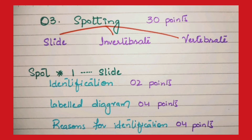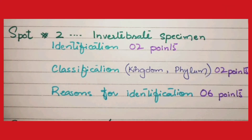Question number three is spotting. There are three spots given to you. Spot one is always a slide. In the slide spot, you have to write the identification worth 2 points, draw a labeled diagram with three to four proper labelings worth 4 points, and write down three proper reasons of identification worth 4 points. Spot one has 10 points altogether, meaning one mark.